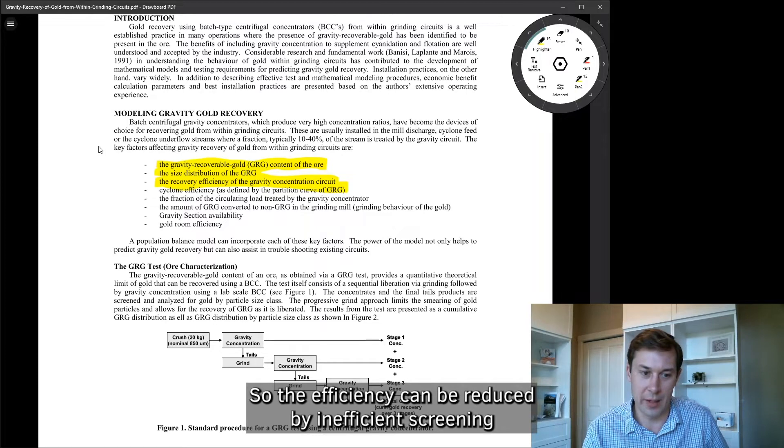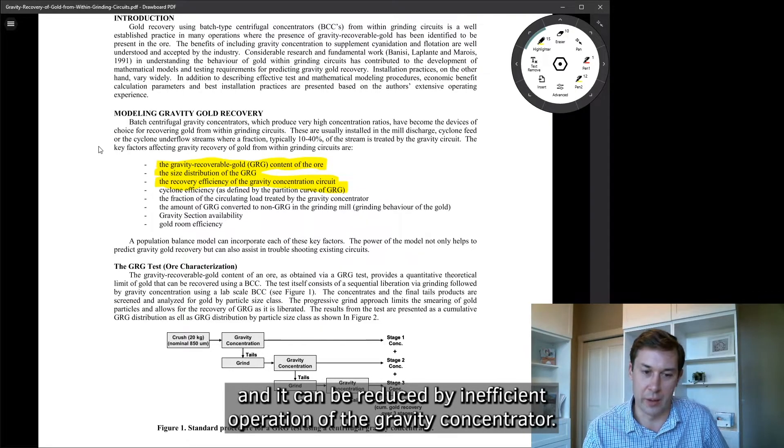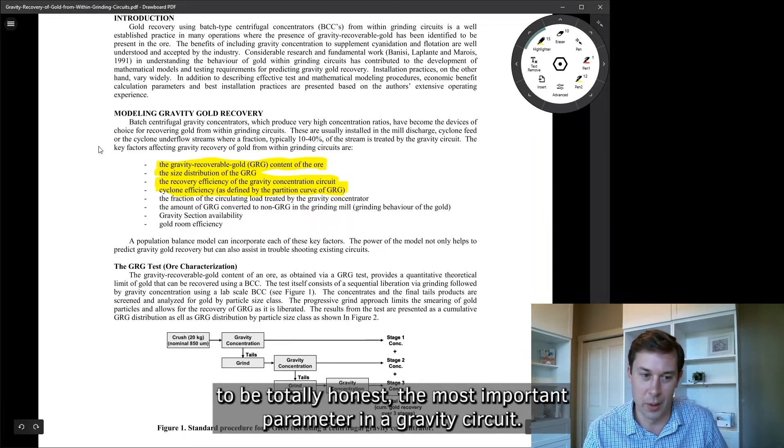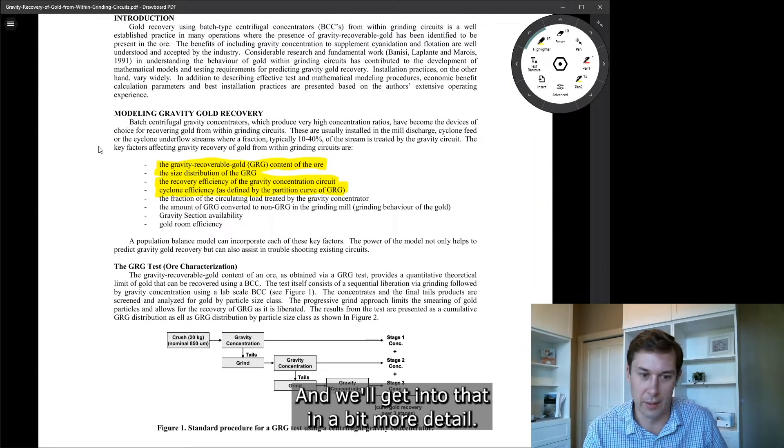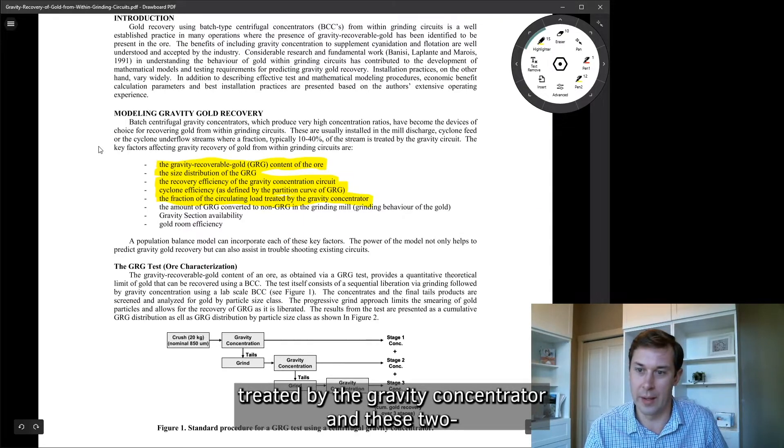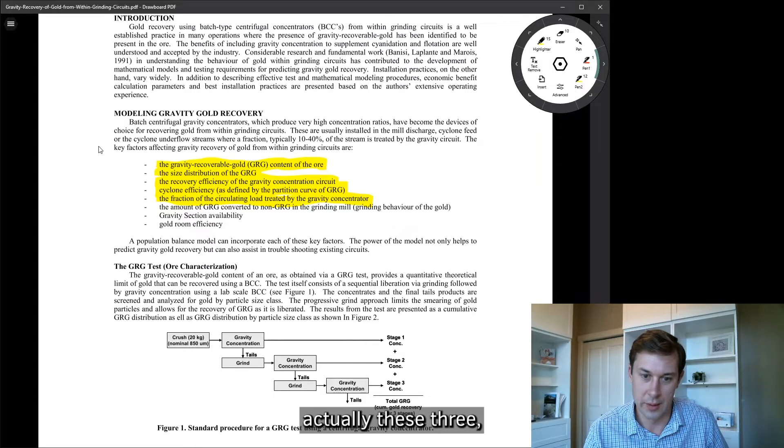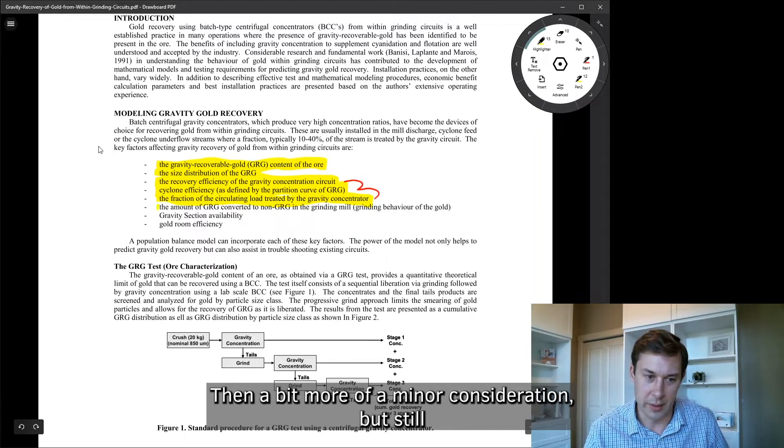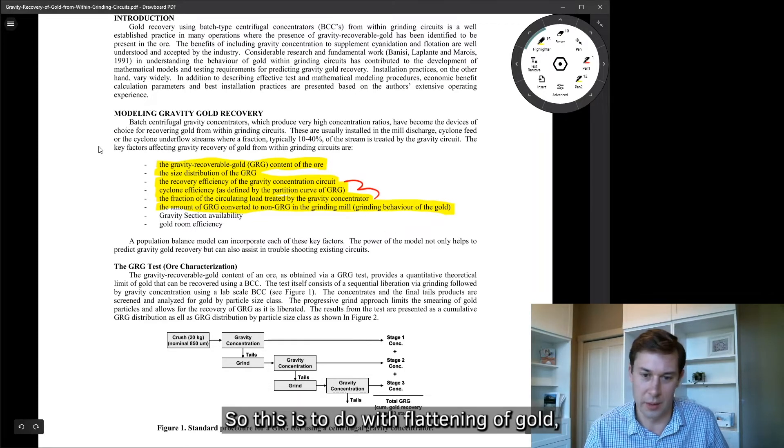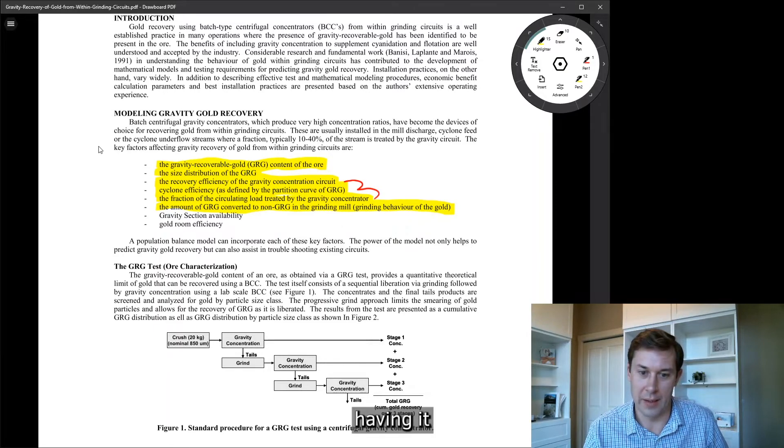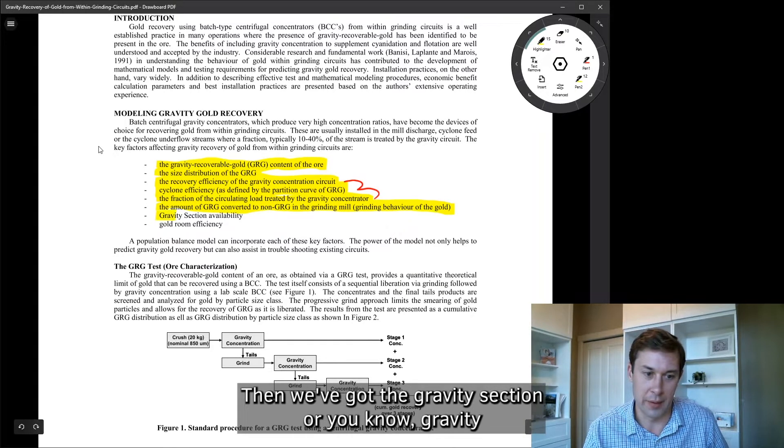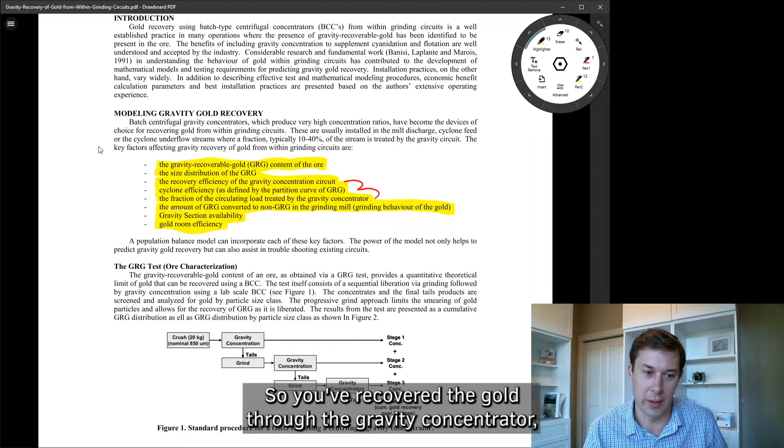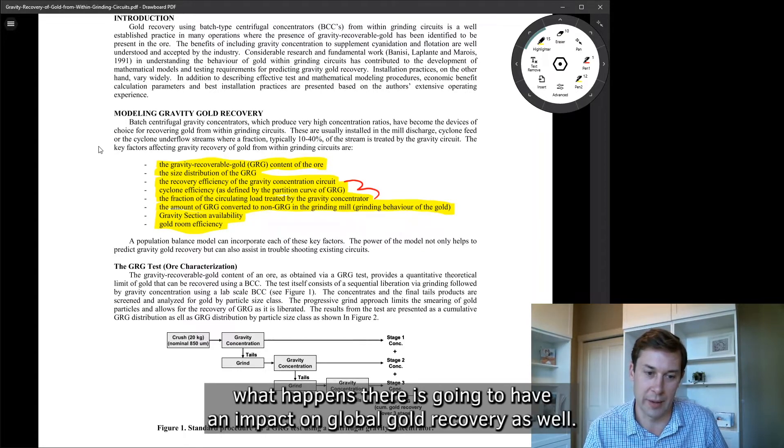Then we've got the recovery efficiency of the circuit. And that's mostly about the gravity concentrator and the screen associated with it. So the efficiency can be reduced by inefficient screening and it can be reduced by inefficient operation of the gravity concentrator. In this case, we're talking about centrifugal concentrators. Cyclone efficiency, this is likely, to be totally honest, the most important parameter in a gravity circuit. And we'll get into that in a bit more detail. We've got the fraction of circulating load treated by the gravity concentrator. And these two, actually these three are all related to one another and affect one another. Then a bit more of a minor consideration, but still meaningful. The amount of GRG converted to non-GRG in the grinding mill. So this is to do with flattening of gold, having it stick on to mill liners, grinding media. Then we've got the gravity section or gravity circuit availability. And then ultimately we've got the gold room efficiency. So you've recovered the gold through the gravity concentrator. It goes to the gold room and then what happens there is going to have an impact on global gold recovery as well.